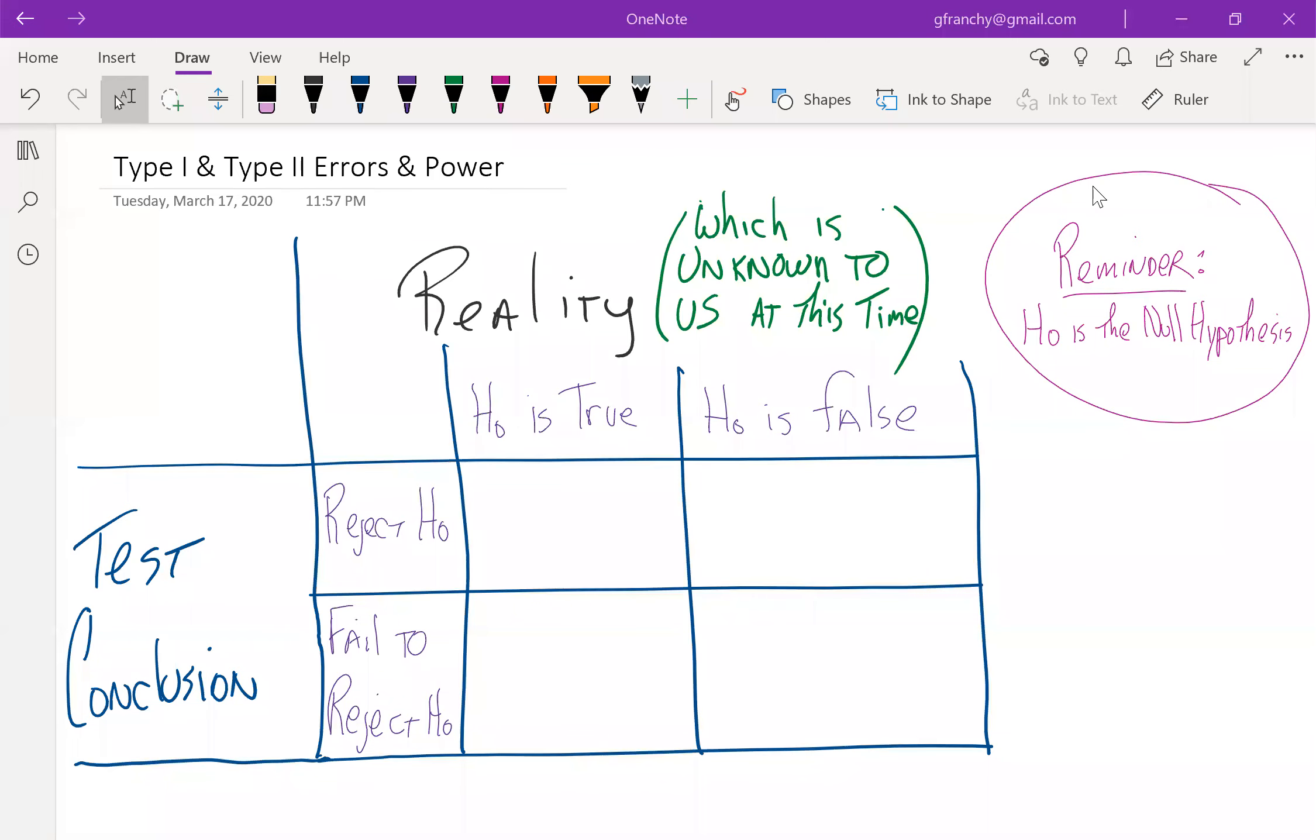One of the things that we have to consider when we go through the hypothesis test process is the possible results that we have versus reality. So what I've drawn up on the screen here is comparable to what's on page 368 of the text.